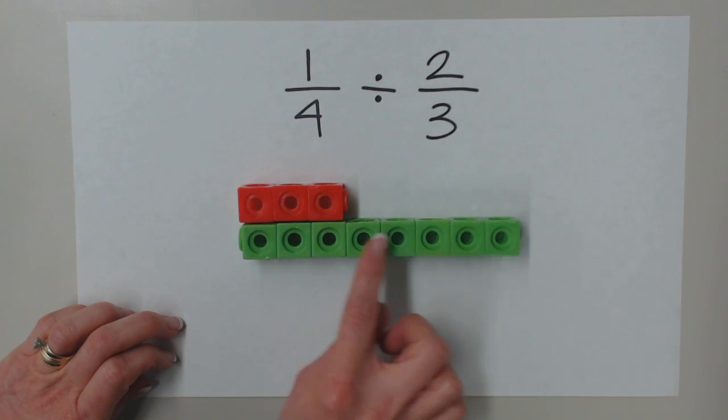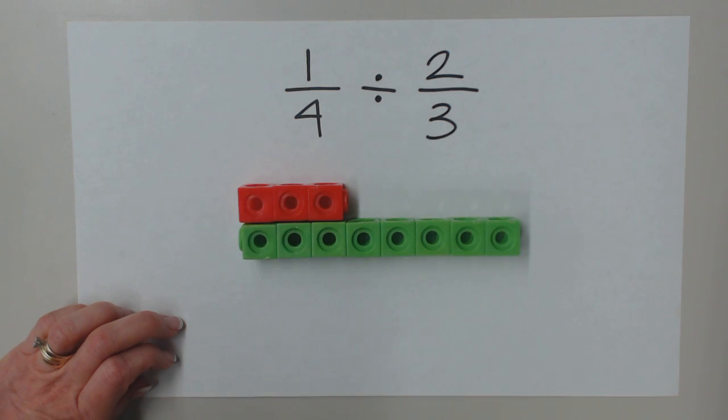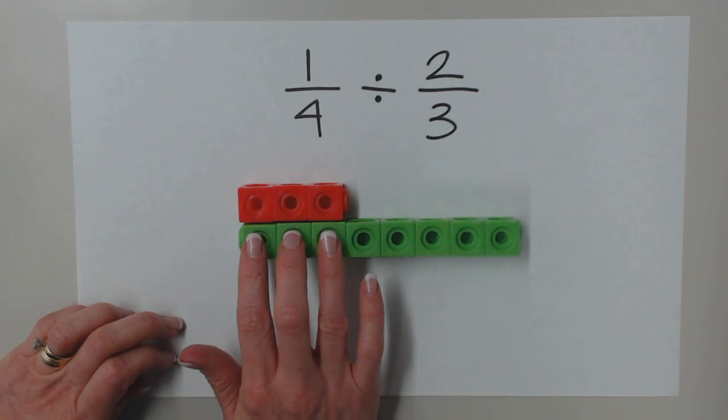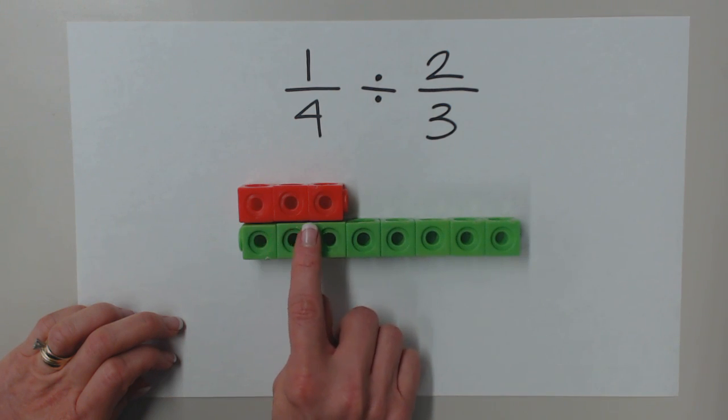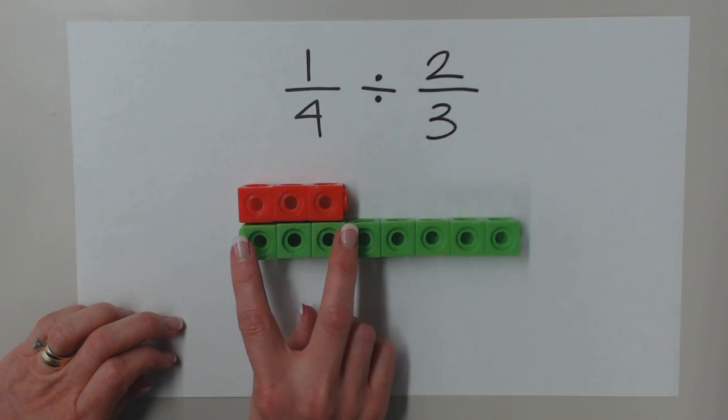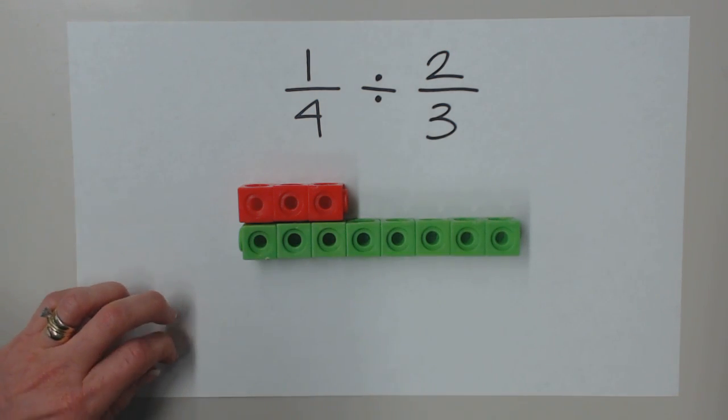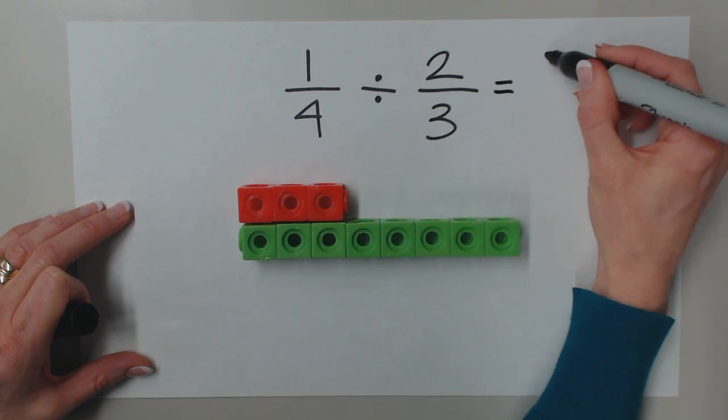Well, it gets a little tricky because we can see that I can't even fit one two-thirds piece into that one-fourth. In fact, I can only fit a portion, and how much is that portion? Well, it's three of these eight pieces, so it's three-eighths of the two-thirds that fits into the one-fourth.